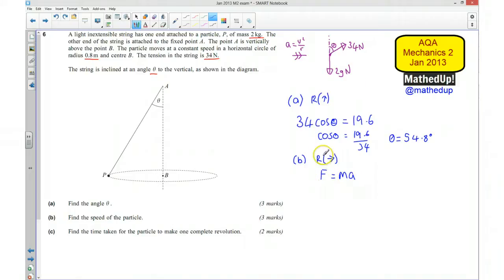So force equals mass times acceleration. Our horizontal force is 34 sine theta, so 34 sine 54.8 degrees equals mass which is 2 kilograms times acceleration which is v squared over r, and r is 0.8.